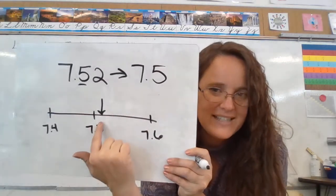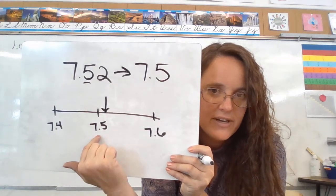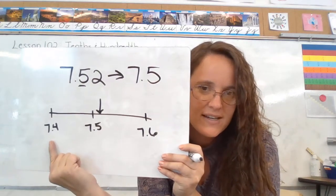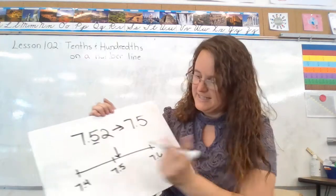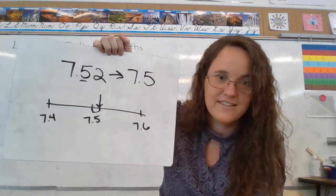and our number is right about there on the number line. Does it make any sense that I would take this number that just passed the 7 and 5 tenths mark and round it the whole way down to 7 and 4 tenths? No,